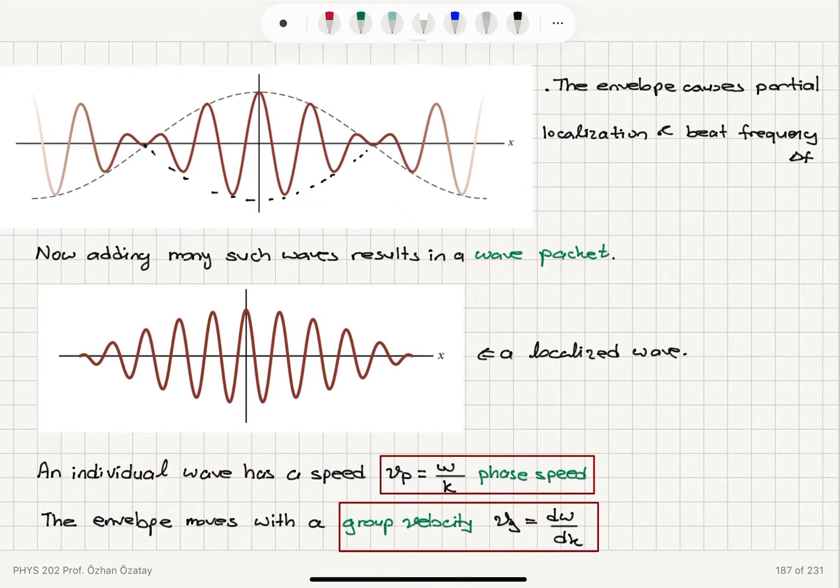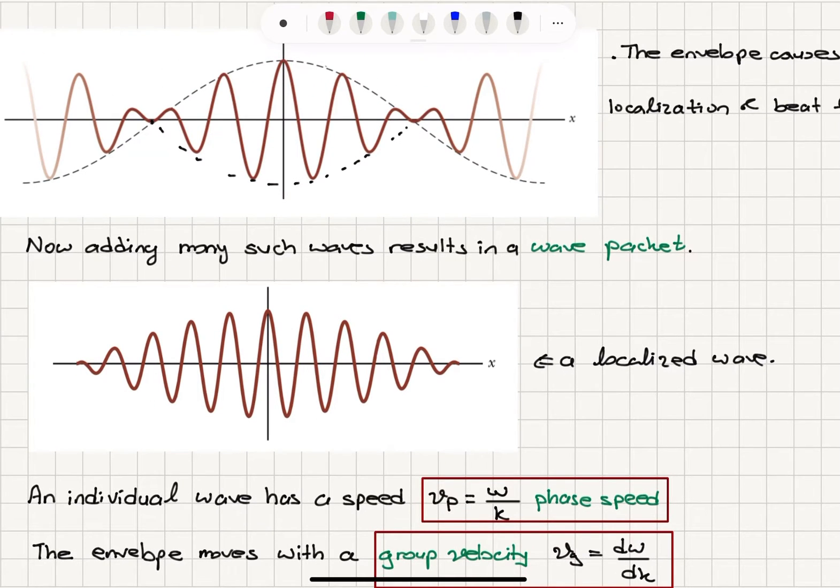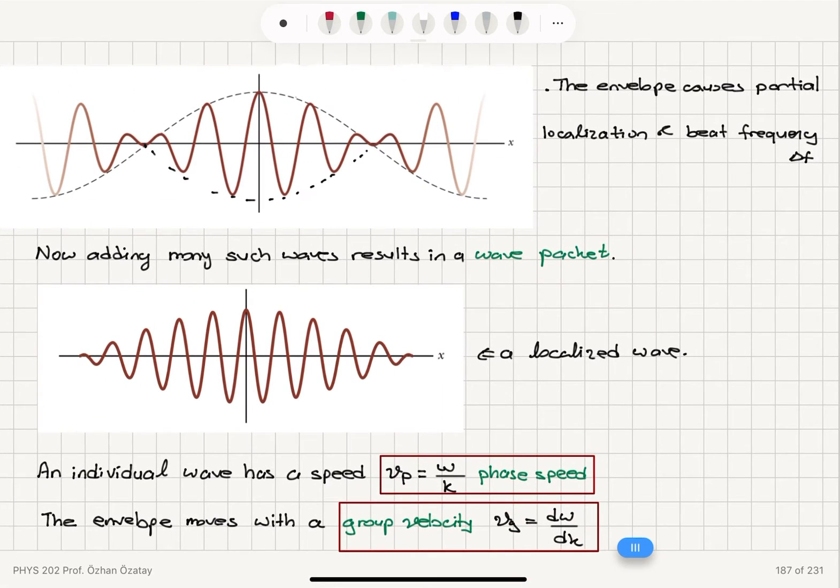Now adding many such waves, if we continue with this procedure, we see more localization and eventually we get this localized wave. An individual wave has a speed which is omega divided by k.